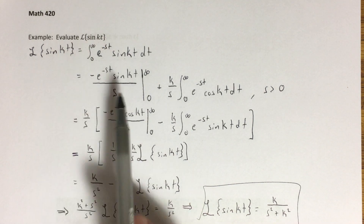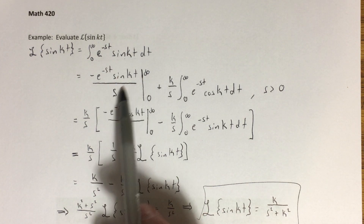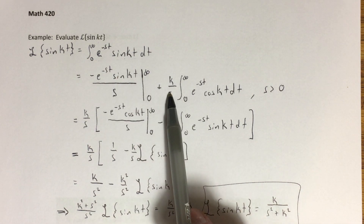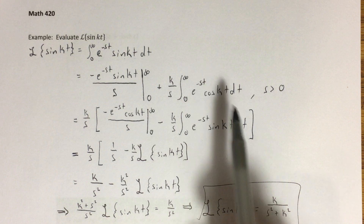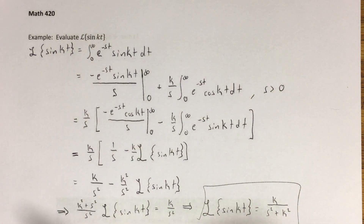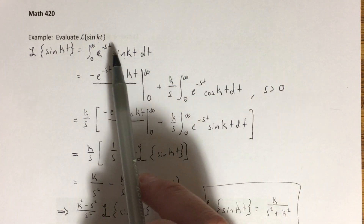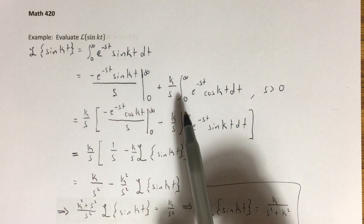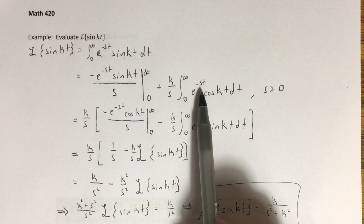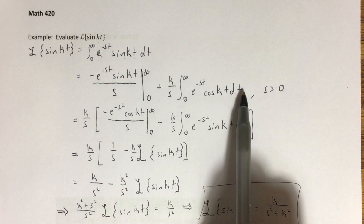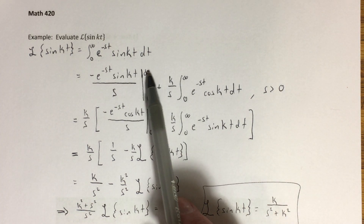Using integration by parts on this function, you get negative e to the negative st times sine of kt over s, evaluated from zero to infinity, plus k over s times the integral from zero to infinity of e to the negative st cosine of kt dt. The constants k and s come from the choice of u and dv and are pulled out of the integral.